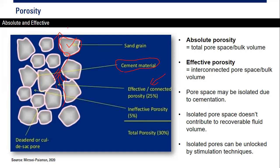Some porosity is ineffective because the pores are isolated — not connected with other spaces. A typical example: effective porosity is 25 percent and ineffective porosity is 5 percent, giving a total porosity of 30 percent. Effective porosity is usually larger than ineffective porosity.